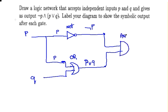And so we have NOT P here and P OR Q down here. And they are going to meet at the AND gate. And so we have NOT P AND (P OR Q).